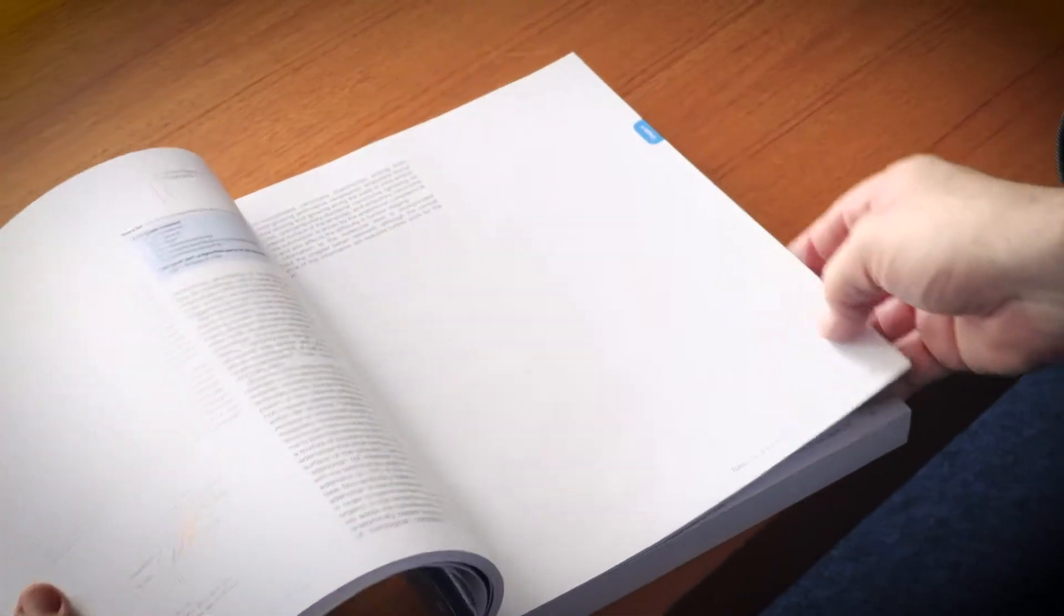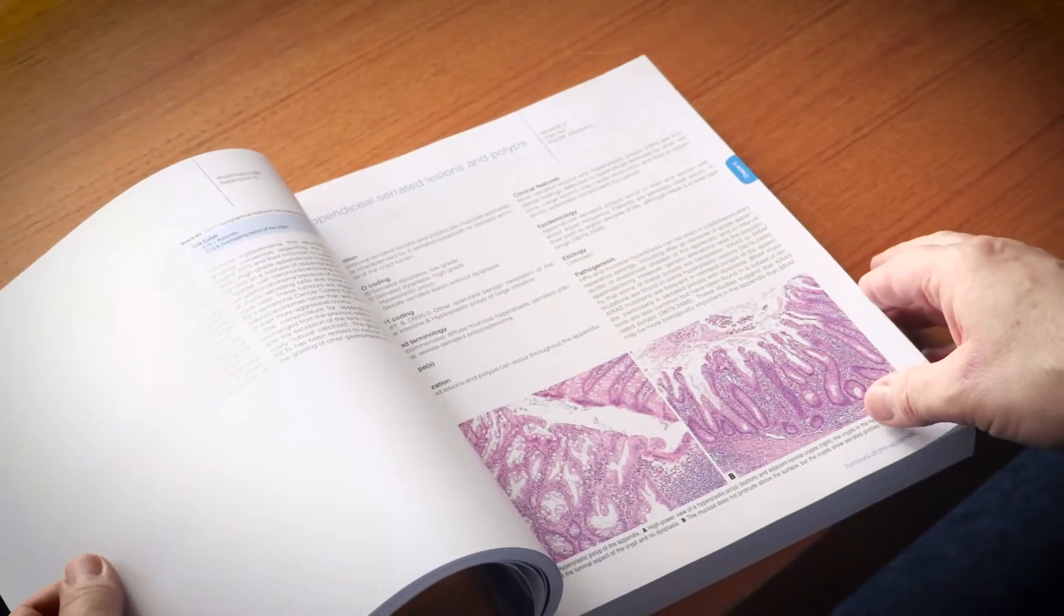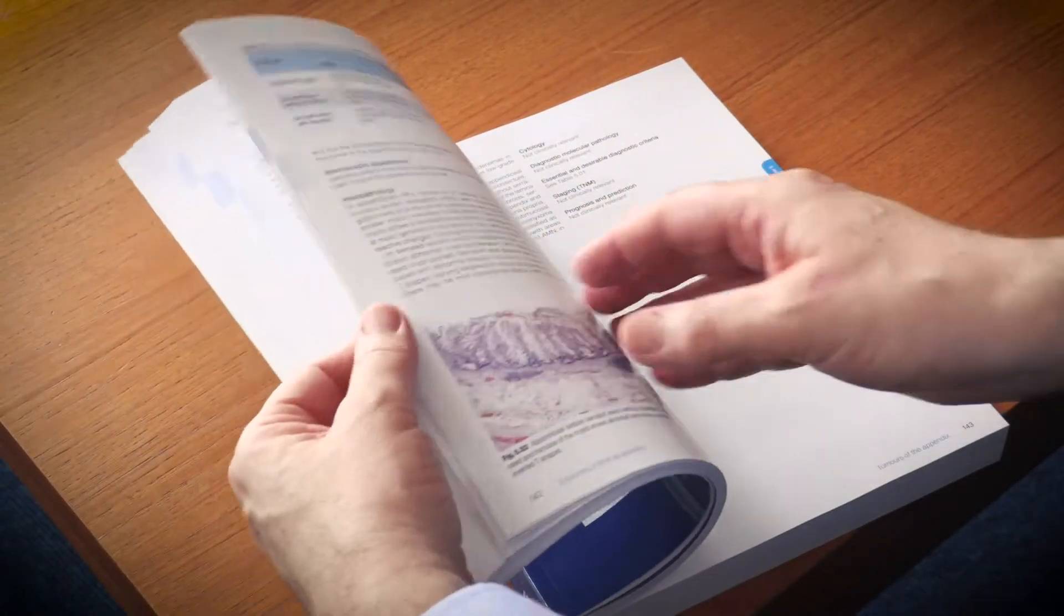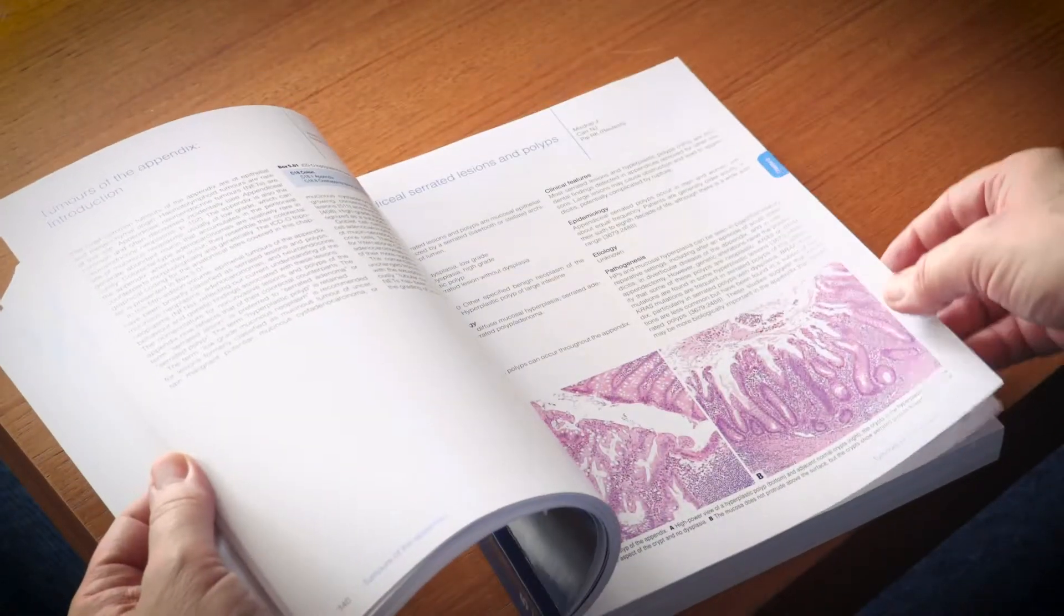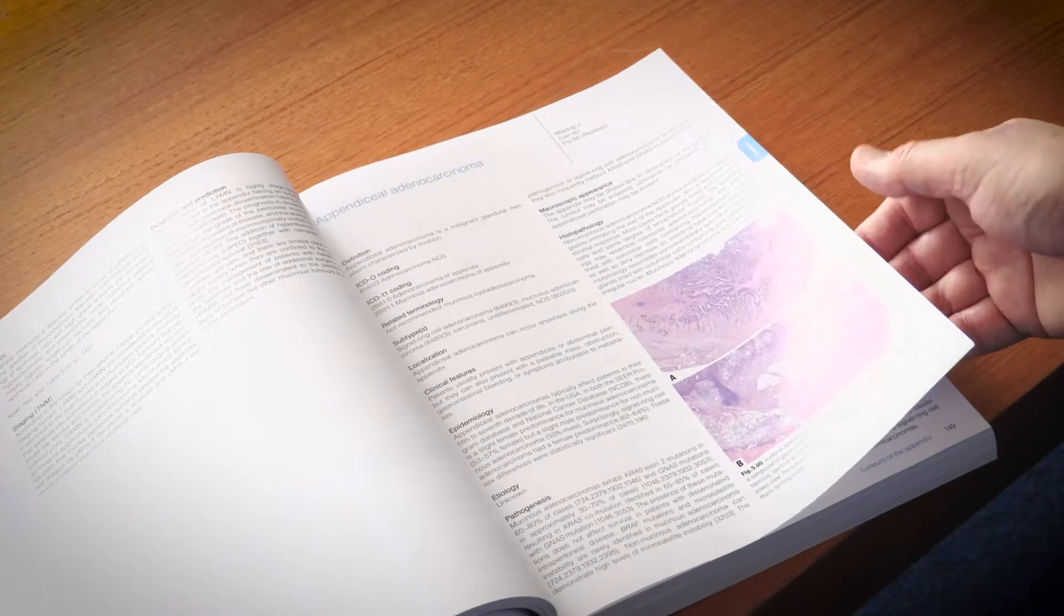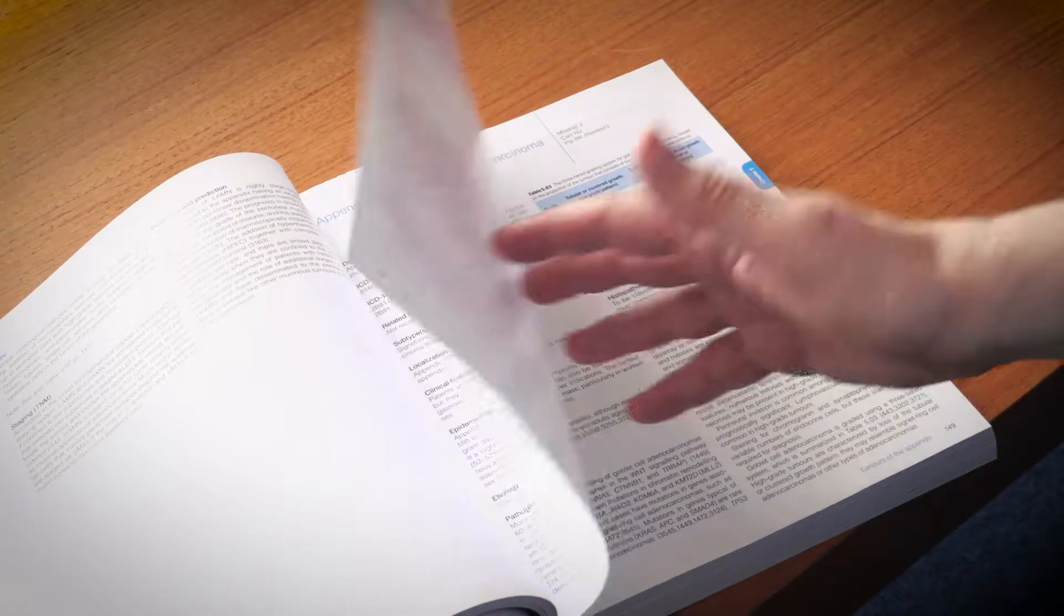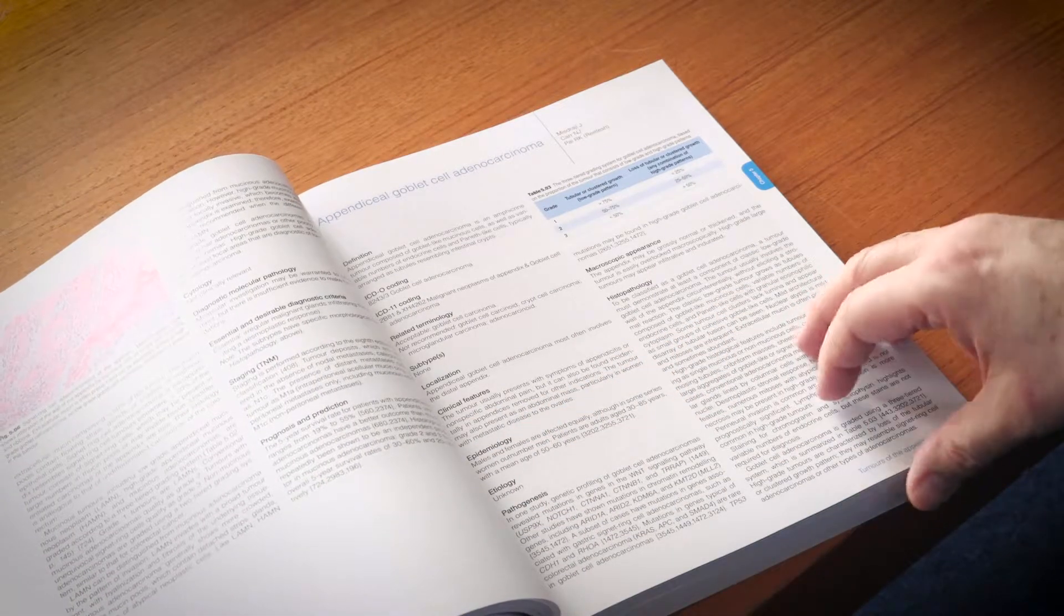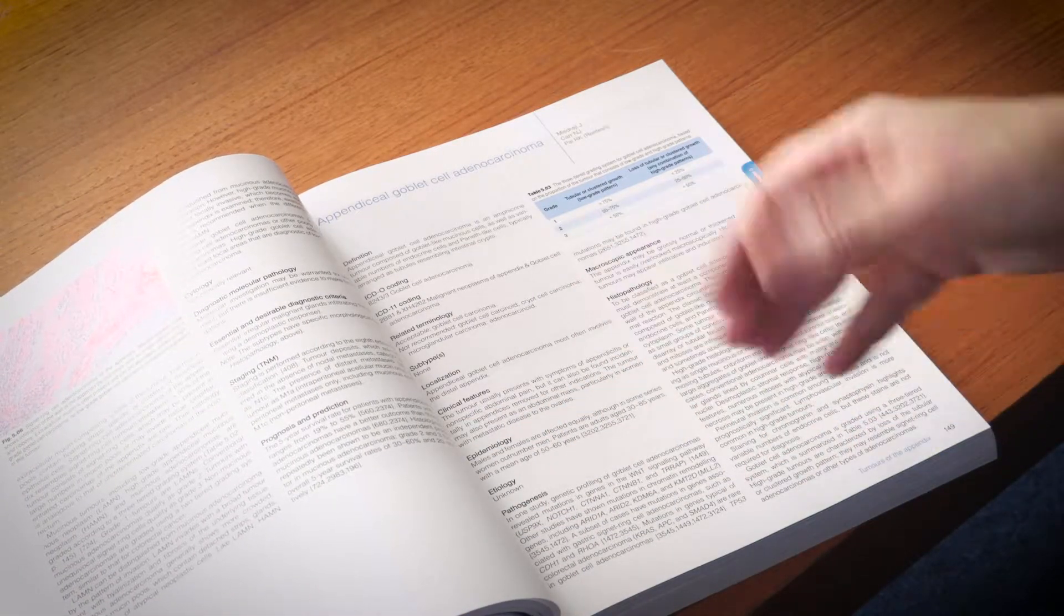Each tumour type has within it a number of subheadings and these subheadings are standardised across the entire series. They cover first of all the coding and the definition of the condition, and then the etiology, pathogenesis, clinical features, epidemiology, and the histopathology.